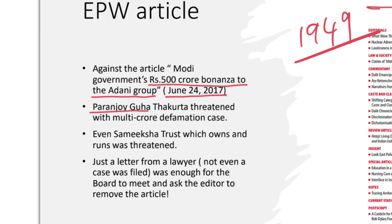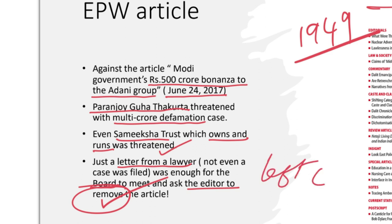And the editor was Paranjoy Guha Thakutta. The editor was threatened with multi-crore defamation case. Even Samiksha Trust which owns and runs was threatened. And this threat was carried through a letter from a lawyer of Adani group. Just this letter was enough for the trust board to meet and asked the editor remove the article. Paranjoy Guha had to remove the article and then he left EPW because he was warned that he cannot write such articles.